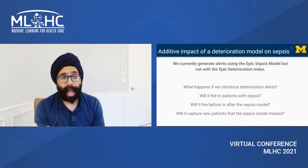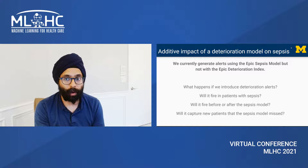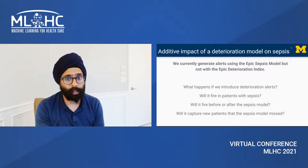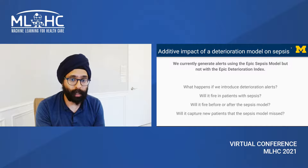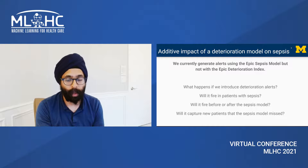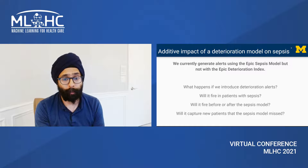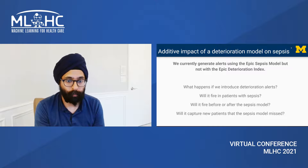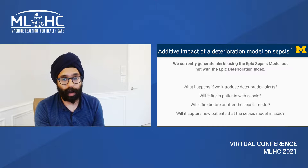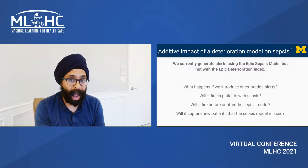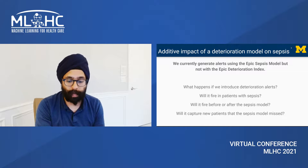We looked at the additive impact of a deterioration model on sepsis. We currently generate alerts using the EPIC sepsis model, but not using the EPIC deterioration index, for which we have a different workflow. We wanted to know what would happen if we were to introduce deterioration alerts — would the deterioration model fire in patients with sepsis? Would it fire before or after the sepsis model? And will it capture new patients that the sepsis model missed?